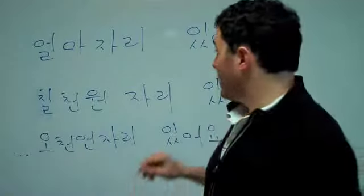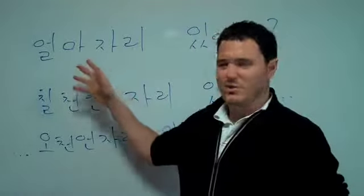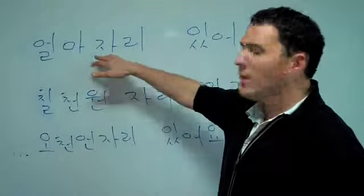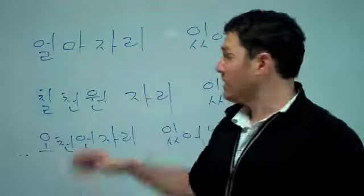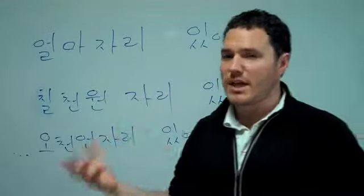Okay, this next one is a little bit difficult to explain, but 얼마 자리 있어요. 얼마 is referring to how much it costs. And 자리, basically when you're saying this, 얼마 자리 있어요.